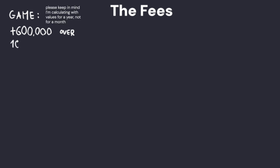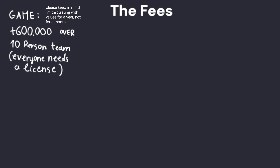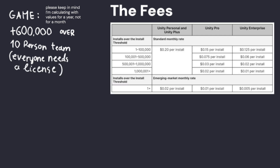I'm going to do the following calculations where a theoretical game is over the threshold by 600,000 installs, so we can do the complicated maths as well, with a team of 10 people where everyone needs a Unity license. For Unity Personal users, this would mean a fee of 600,000 times $0.20, which is $120,000. Doesn't sound that great now, does it?